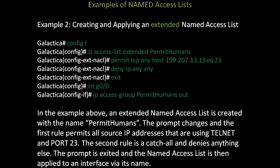In the example above, an extended named access list is created with the name permit humans. The prompt changes, and the first rule permits all source IP addresses using Telnet and port 23. The second rule is a catch-all and denies anything else. The prompt is exited, and the named access list is then applied to an interface via its name.